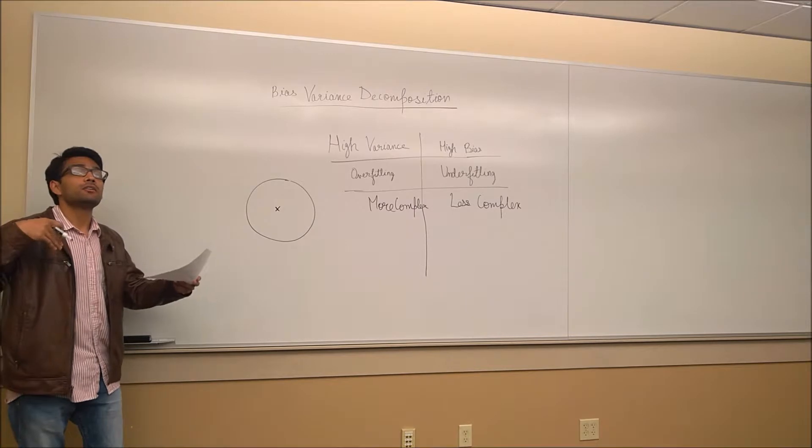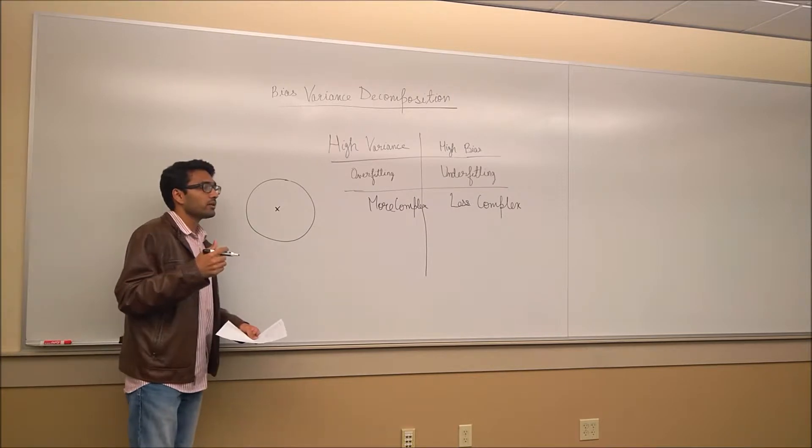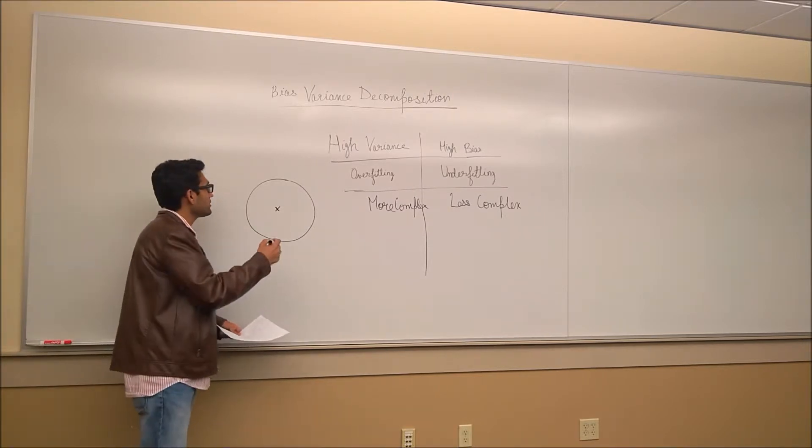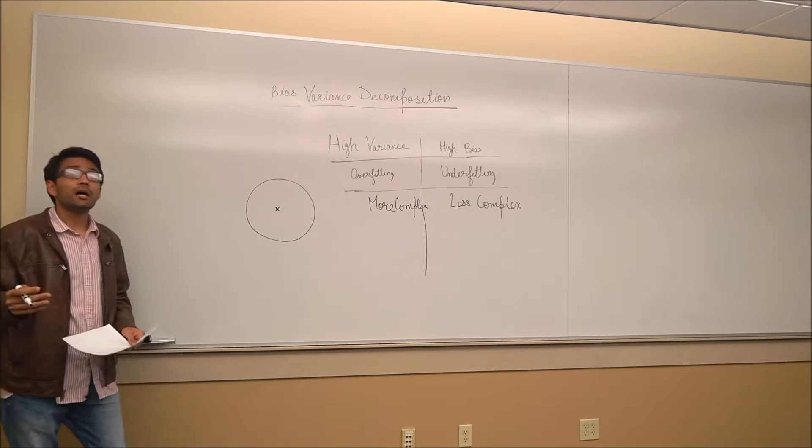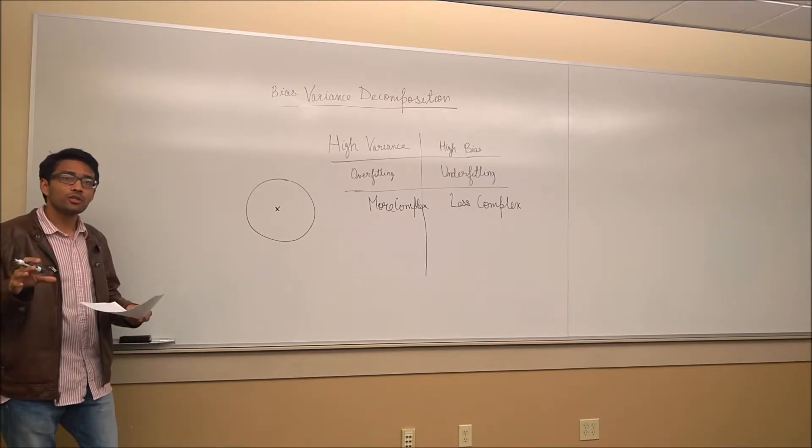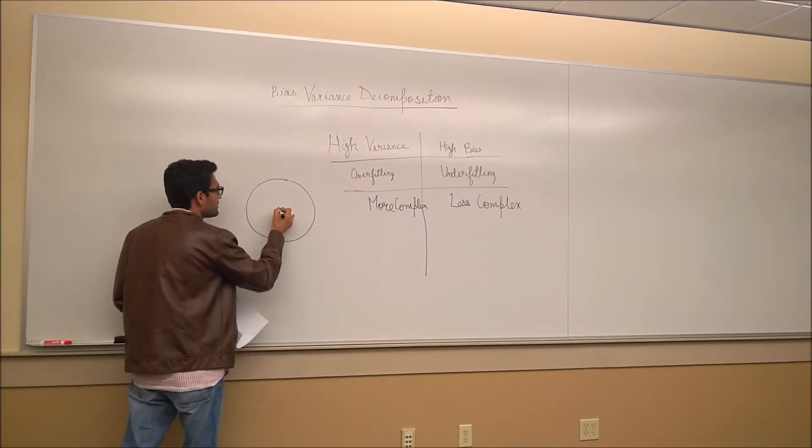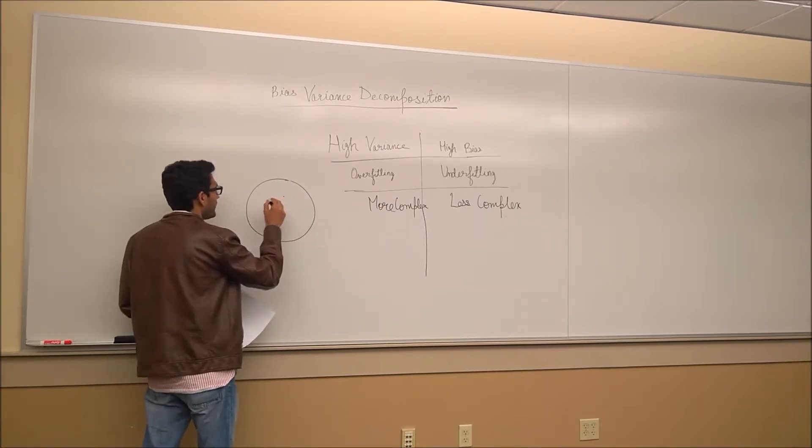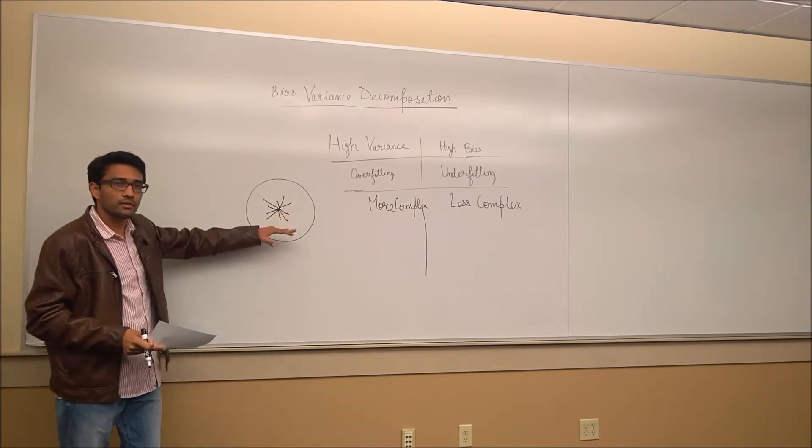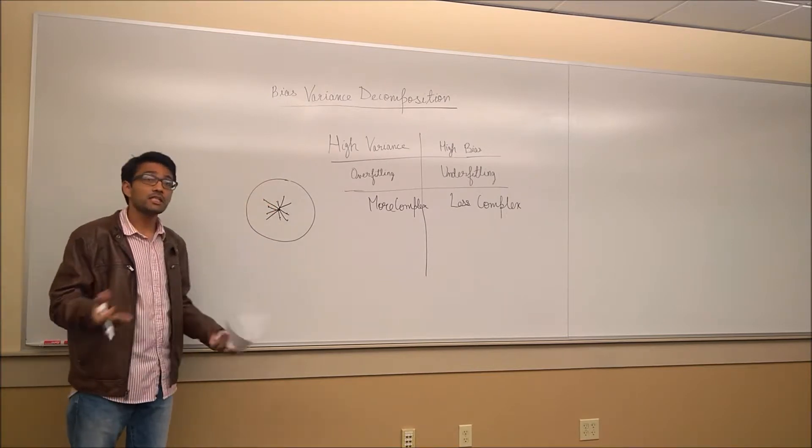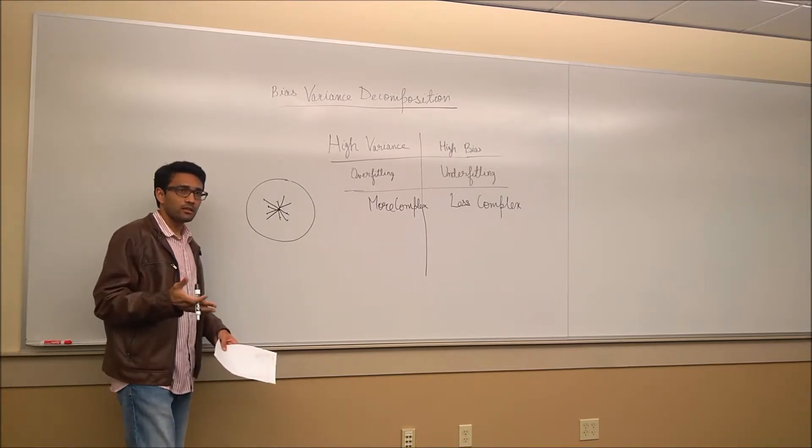You can understand this from another perspective. Imagine when my job is to consistently hit this target, where could the error come from? The error can come from two sources. If I try and visualize error in these terms, the error can come from two places. Either the error is coming because I am not hitting the right spot, I am hitting it really far away from the right spot, or I am hitting the right spot on an average, but I am not consistently hitting it.